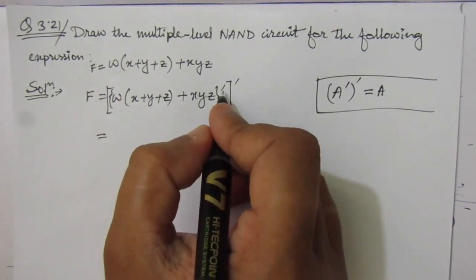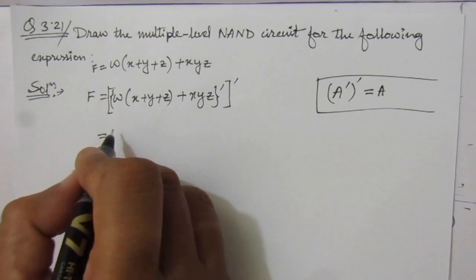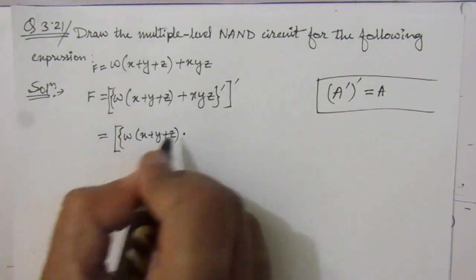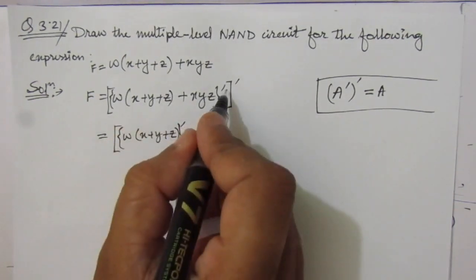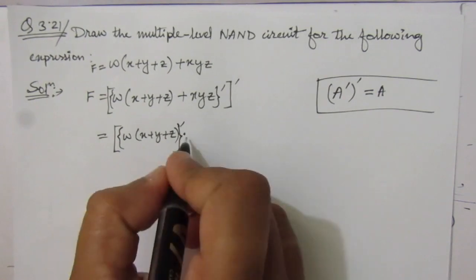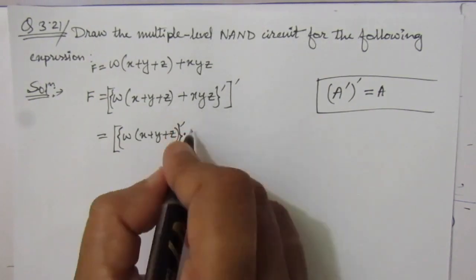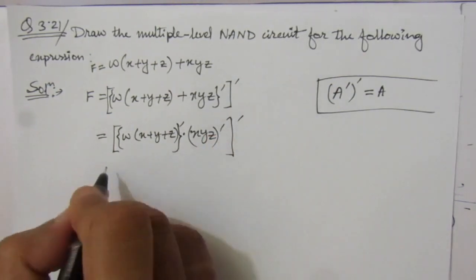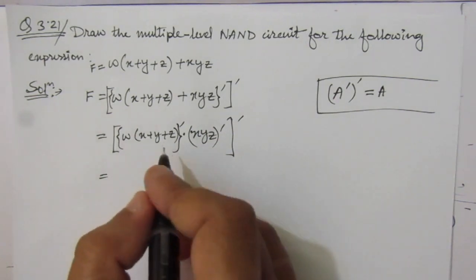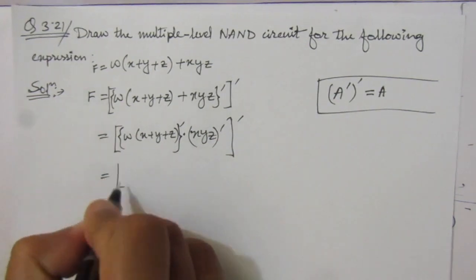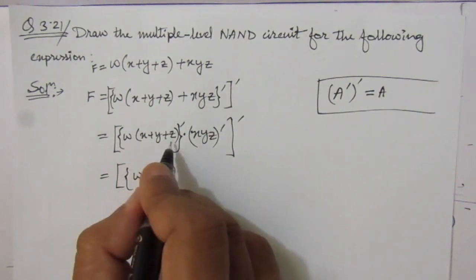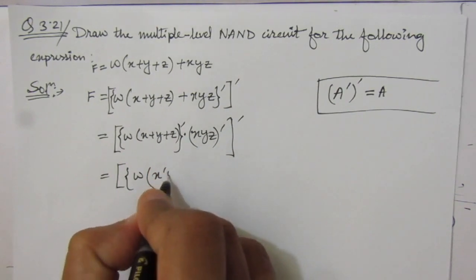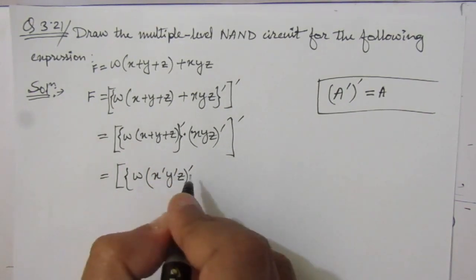So let us break the first complement. We get: w · (x + y + z) whole bar. Using De Morgan's theorem, A + B whole bar equals Ā · B̄. So inside the bracket, (x + y + z) can be rewritten as (x̄ · ȳ · z̄) whole bar, using De Morgan's theorem.